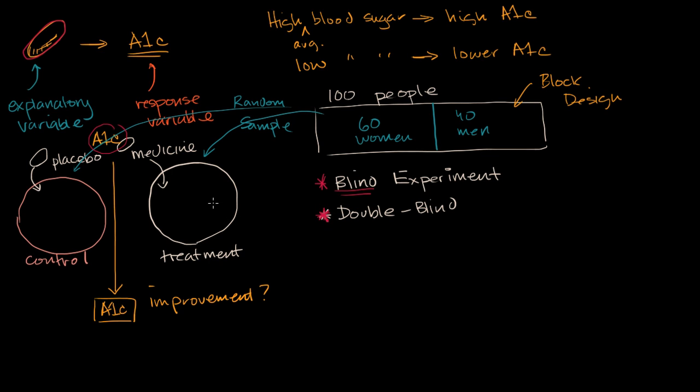But this doesn't mean that it's a perfect experiment, and there seldom is a perfect experiment, and that's why it should be able to be replicated. Other people should try to prove the same thing, maybe in different ways, but even the way that we designed it, there's still a possibility that there are some lurking variables in here.